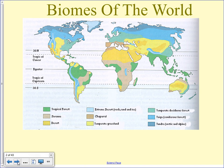Tropical rainforests also need a lot of rainfall — lots and lots of it. So they get warm temperatures, it never freezes, things like that.